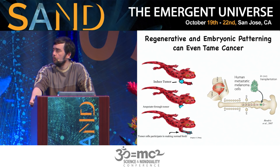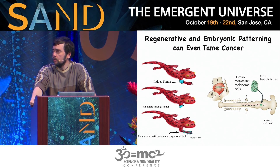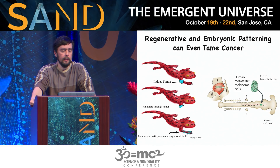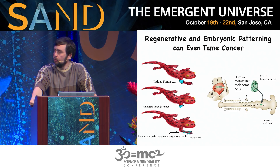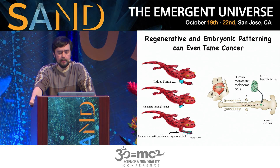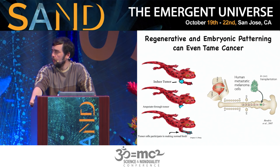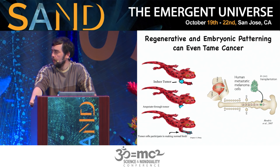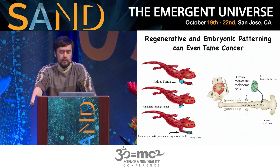Everything I'm showing you is about the control of shape, and this extends to the problem of cancer. One way to think about cancer is as cells that have stopped obeying the normal patterning cues of the body — they've reverted to an almost unicellular identity where they treat the rest of the organism as the environment. It turns out that processes of regeneration and development can reprogram or tame cancer cells. Putting aggressive human cancer cells into embryos shows that the surrounding environment can provide patterning cues causing these cancer cells to behave normally and become part of normal tissues. This potentially has real implications for cancer therapy beyond simply killing cells with chemotherapy.